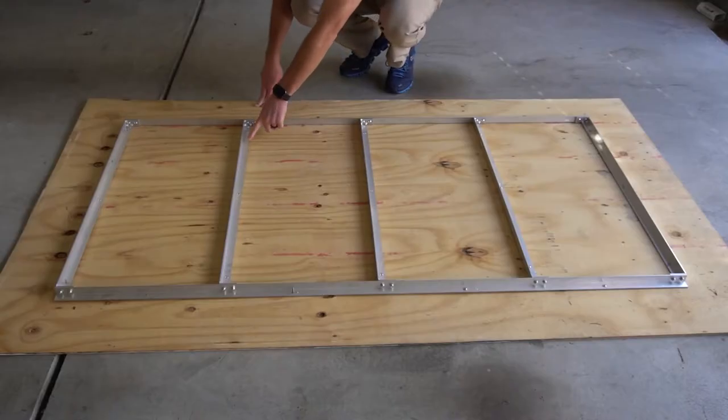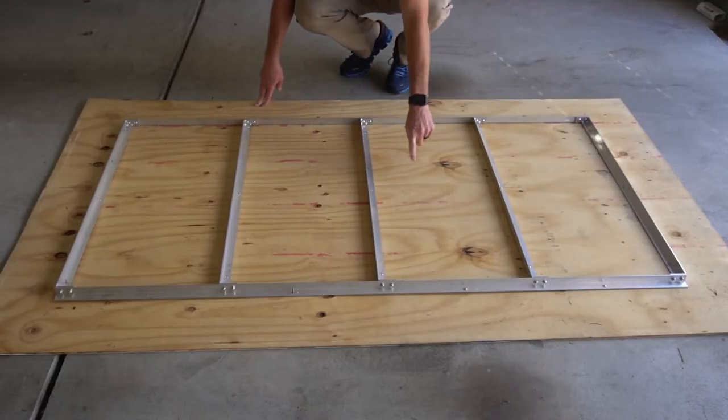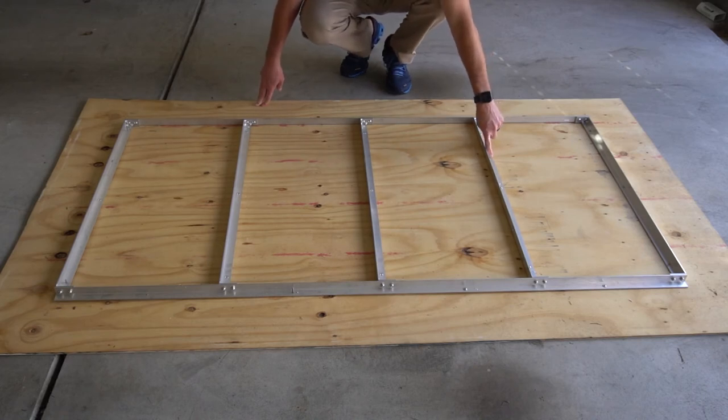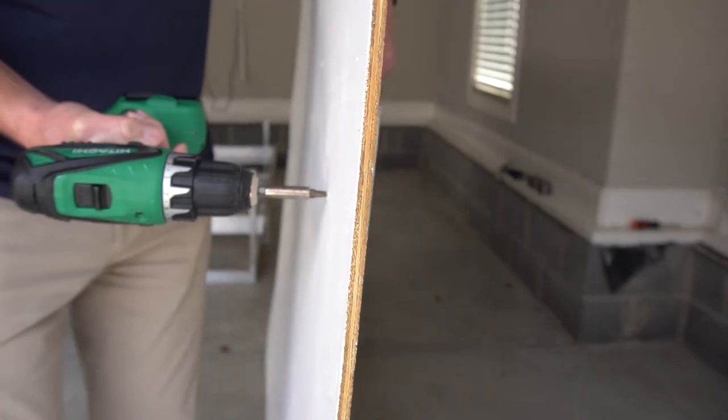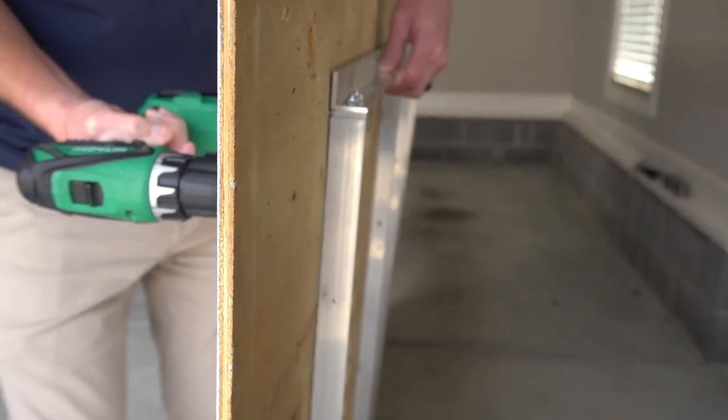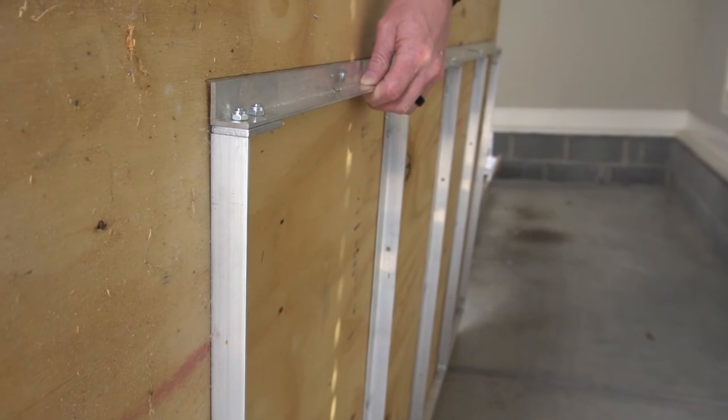Assure the ceiling panel support bars are oriented properly. Use the supplied self-tapping screws to attach the panel to the bottom of the ceiling panel support. Follow the step 20 diagram in the installation guide for where to place the screws.